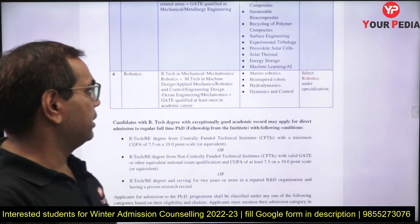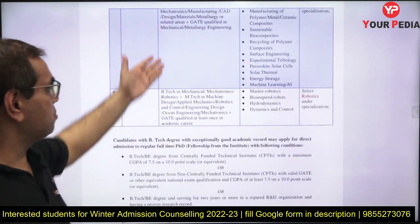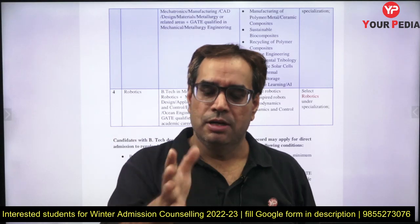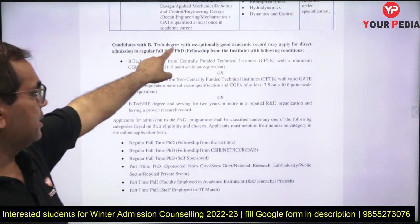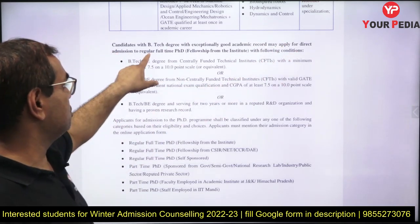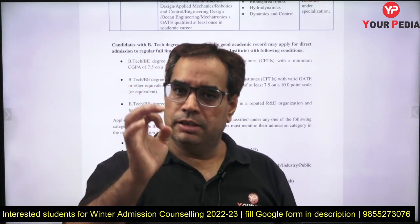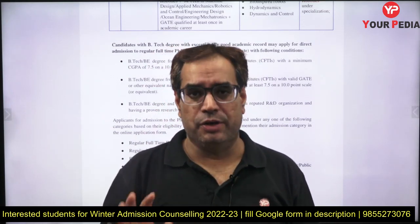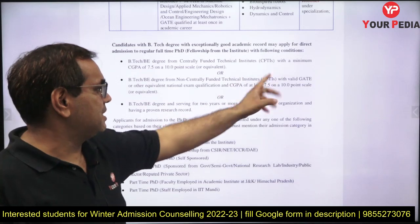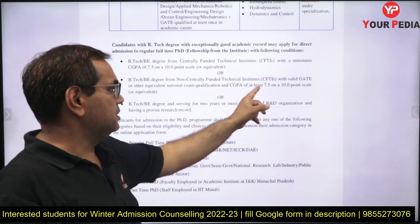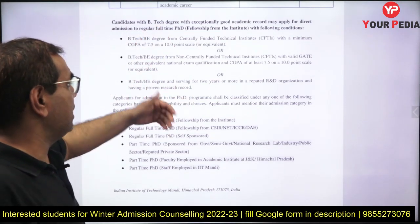Research areas in Robotics include marine robotics, hydrodynamics, dynamics and control, and bio-inspired robots. For all the domains mentioned, the standard criteria is BTech plus MTech plus GATE. However, there is a relaxation: candidates with a BTech degree and an exceptionally good academic record can apply for direct admission to regular full-time PhD with institute fellowship. For direct PhD, either a CFTI BTech with 7.5 CGPA, or a valid GATE score plus 7.5 CGPA, or 2 years of post-BTech experience is required.